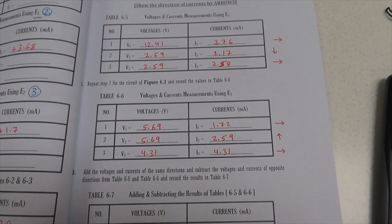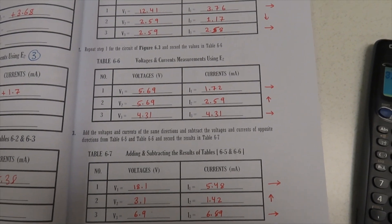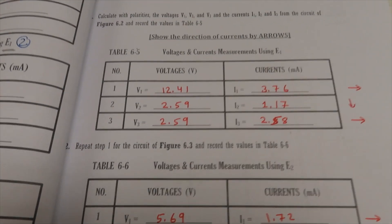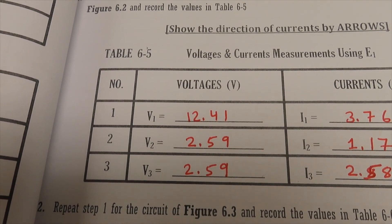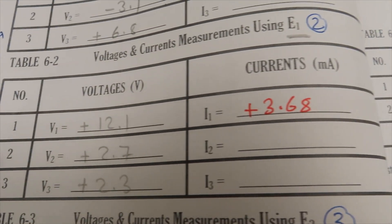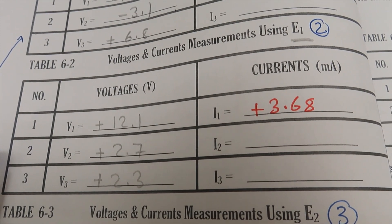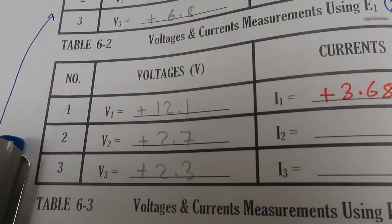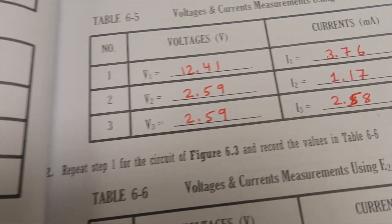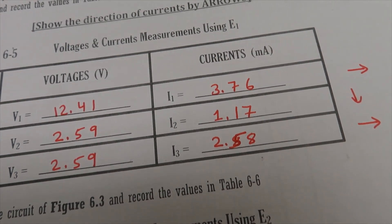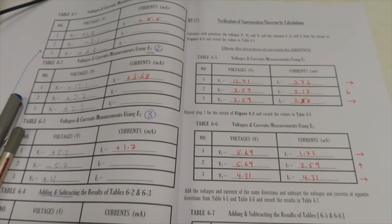These tables are the theoretical solution of the circuit. Comparing: using E1 only, the theoretical voltage is 12.4 V, 2.59 V, 2.59 V. Our measured values were 12.1 V, 2.7 V, 2.3 V — very close. The current we measured was 3.6 mA and the theoretical value is 3.7 mA. Thank you so much guys.